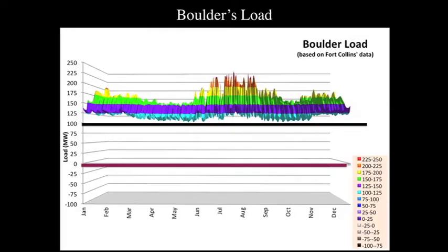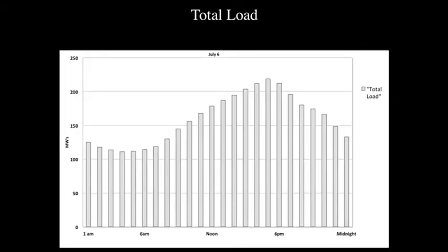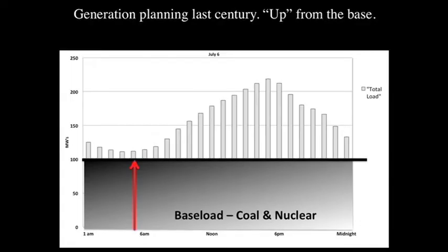Here's our load. Let's look at a single day — a slice through this data. Here's July 6th, a hot summer day. Our peak of usage is at 5 p.m. and our minimum is at about 4 a.m. In the past, you used base load power plants to fill in just below the minimum of the load, but you have to meet the load every hour of the day.